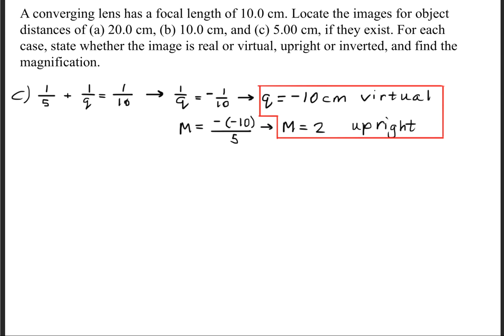And for part C, when you go ahead and do all the math, you'll find that the image is negative 10 centimeters, and the magnification is a positive two.